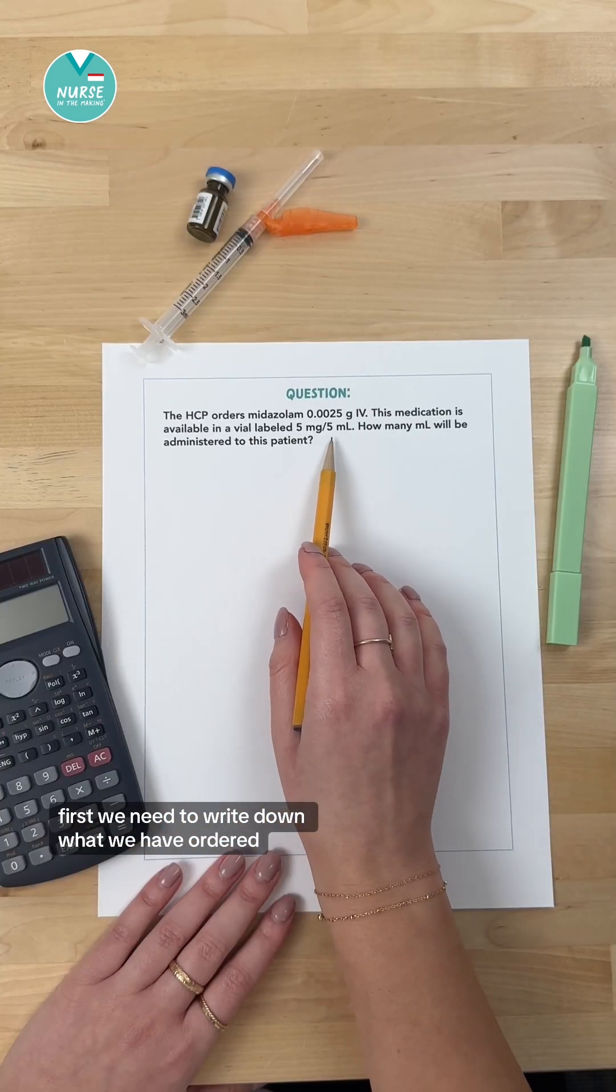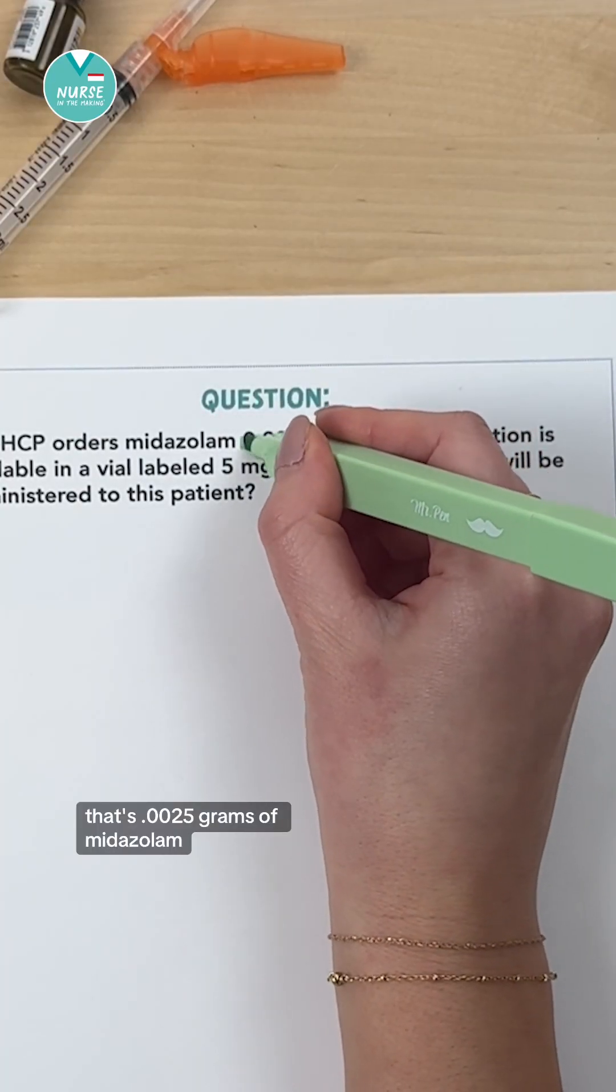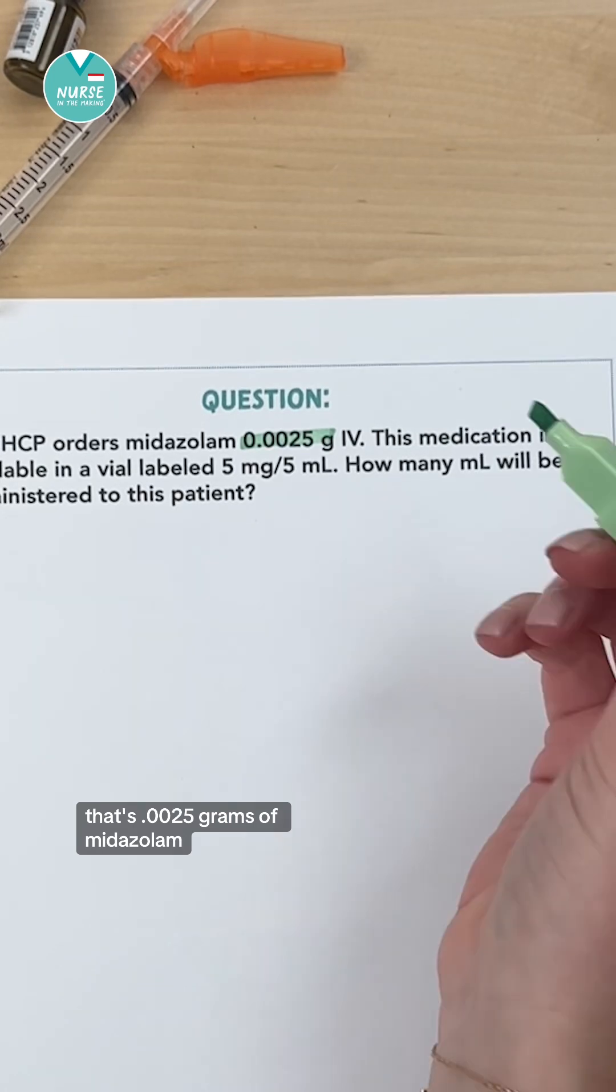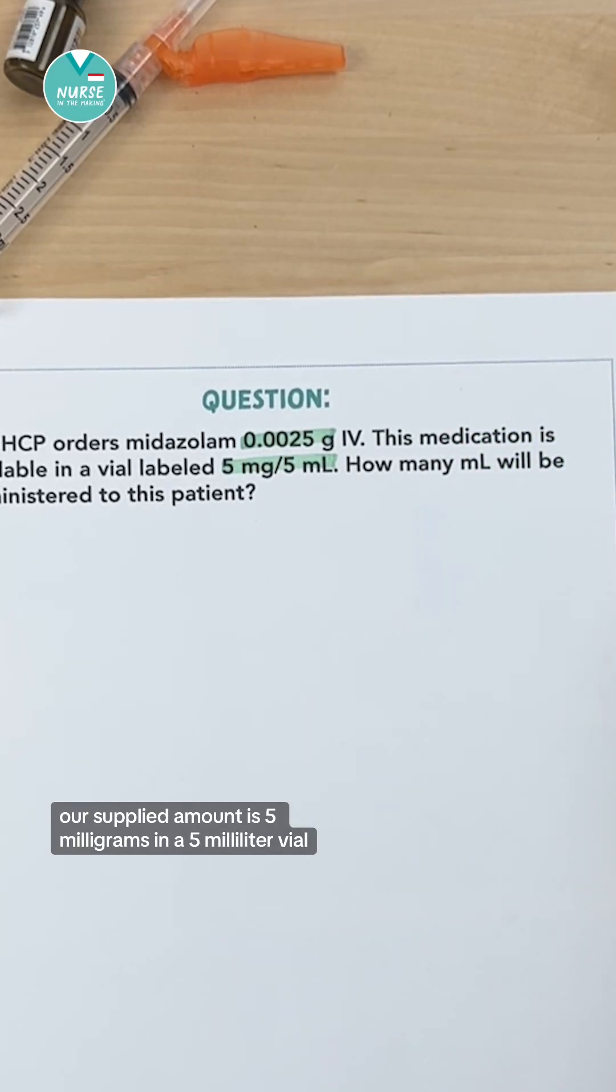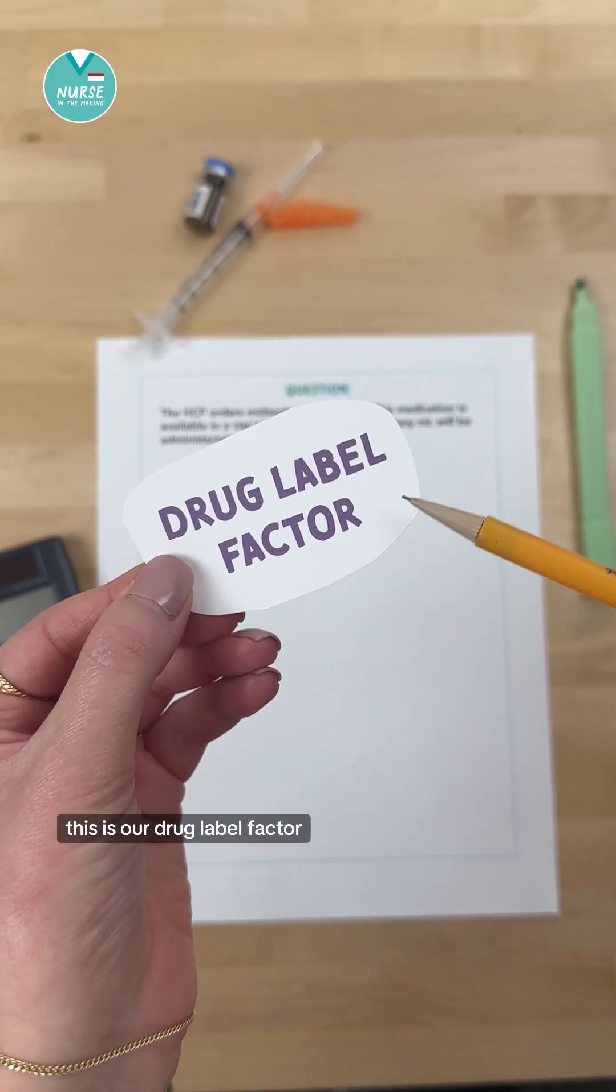First we need to write down what we have ordered. That's 0.0025 grams of midazolam. Our supplied amount is 5 milligrams in a 5 milliliter vial. This is our drug label factor.